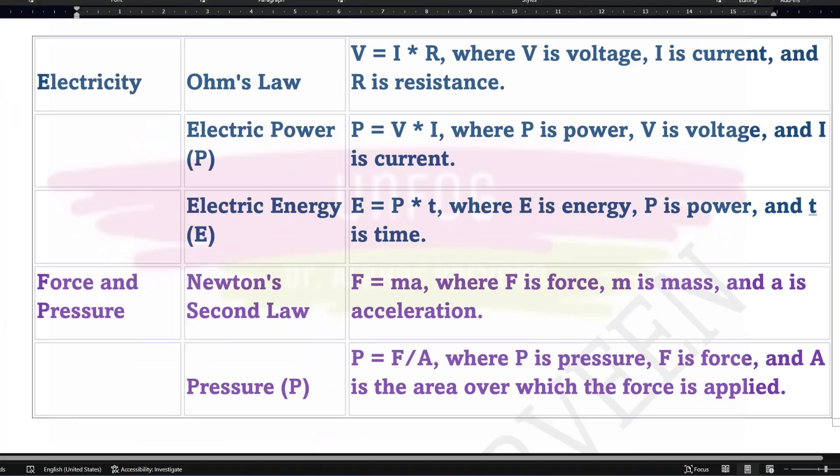Then we have a formula in electricity. I am giving you a few simple formulae like Ohm's law. V is equal to IR and we have a formula for electric power which is equal to V into I where V is the voltage and I is the current. And if we talk about electric energy, then that electric energy is equal to power into time.